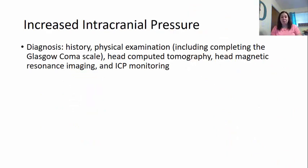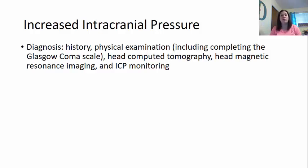Increased intracranial pressure can be diagnosed with a history and physical exam, including the Glasgow Coma Scale, Head CT, and Head MRI — these are really important because they show whether the brain has shifted into different areas indicating herniation. We also need to monitor this pressure constantly because it can change from minute to minute based on cerebral spinal fluid, blood flow, and the swelling taking place in the brain.